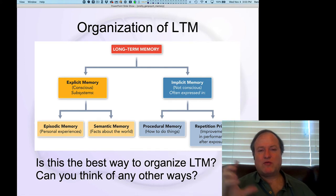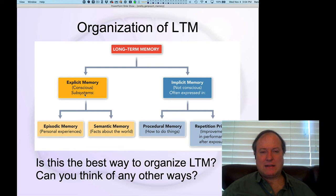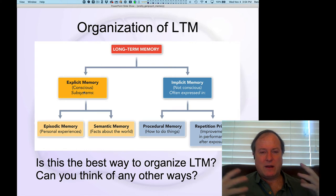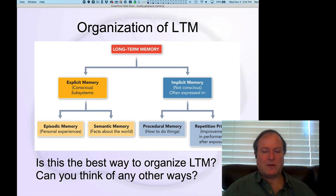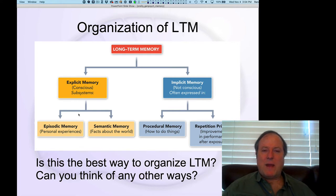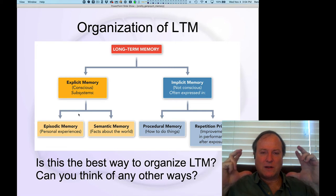If we translate that into the way we understand neural systems, we can kind of bypass the specific criteria of conscious access, which is phenomenologically very important. But from a more objective science perspective, it might be better to organize things in terms of underlying neural mechanisms. So we can just translate this to say this is memory that depends on those higher level parts of the brain.